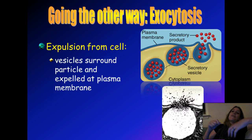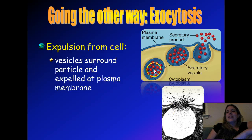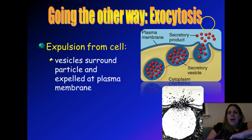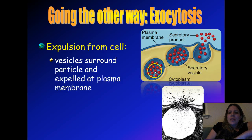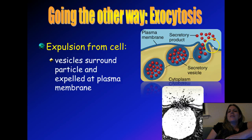Sometimes you want to take stuff that's inside the cell and get it outside — that's called exocytosis. 'Exo' means outside, so this is expulsion from the cell. Whatever you're trying to get rid of — broken down waste products, toxins — or trying to transport needed proteins to other areas, it's been packaged in a vesicle. The membrane around the vesicle is also a phospholipid bilayer, so as it migrates to the edge of the cell it merges with the plasma membrane, causing part of it to open up and out it goes.